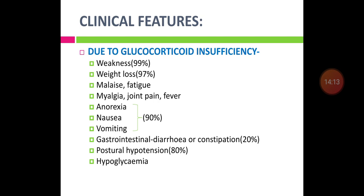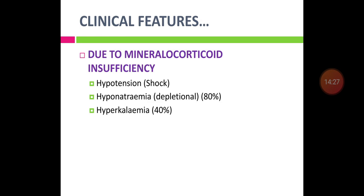Gastrointestinal symptoms like diarrhea or constipation occur in about 20%. On examination, postural hypotension is seen in 80% of patients. Hypoglycemia is seen on investigation. Mineralocorticoid deficiency results in hypotension, hyponatremia in 80% of patients, and hyperkalemia in about 40%.